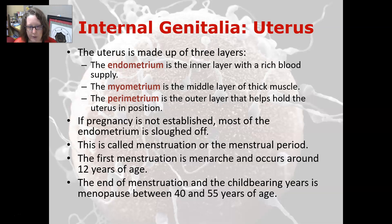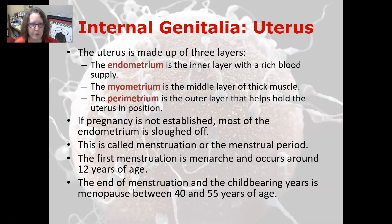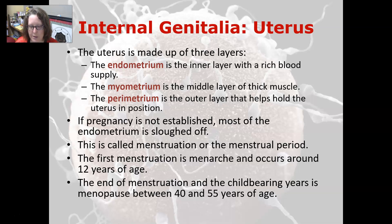If pregnancy is not established, most of the endometrium is shed as the period, or menstruation. The first menstruation is called menarche and occurs around 12 years of age, with some variation due to environment and genetics. The end of menstruation and the childbearing years is menopause, which can happen anywhere between ages 40 and 55.